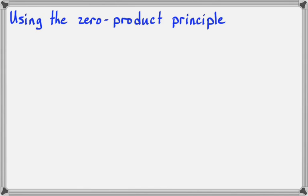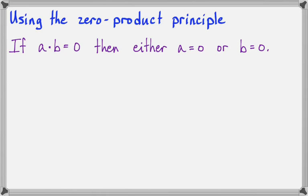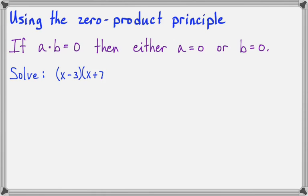In this lesson, we're going to talk about how to use the zero product principle to solve equations. Here it is: if A times B equals zero, then we know one thing about A and B — either A equals zero or B equals zero. The only way you can multiply two numbers together and have them equal zero is if one of the numbers is zero. We can use this really simple idea to solve equations that are in factored form.